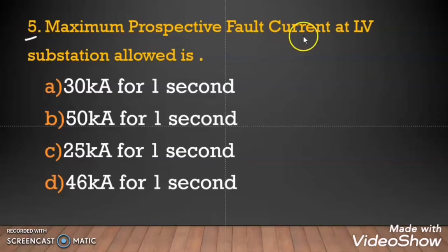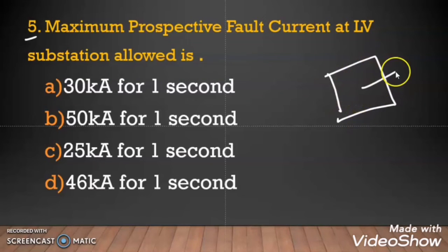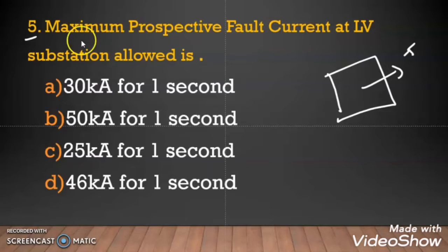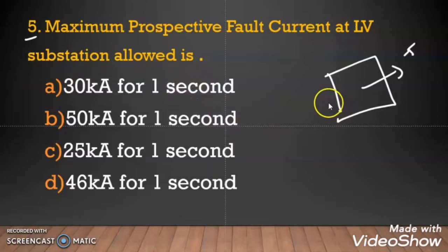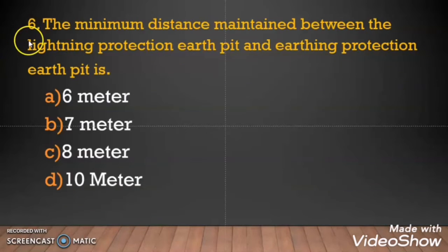Question 5: Maximum prospective fault current at LV substation allowed. The prospective short circuit fault current depends on your transformer rating. The answer as per ADDC regulation is 46 kilo ampere for 1 second. That is the maximum prospective fault current allowed at the LV substation level.